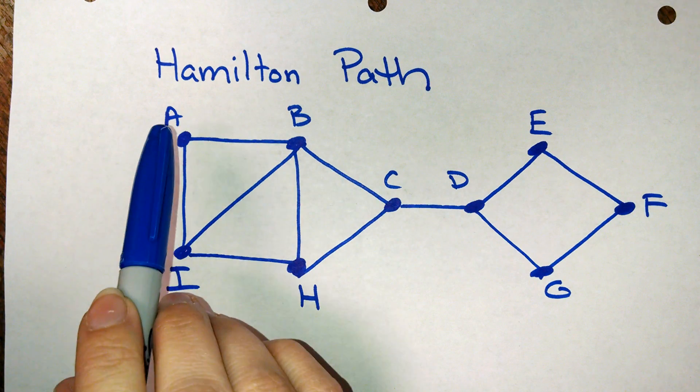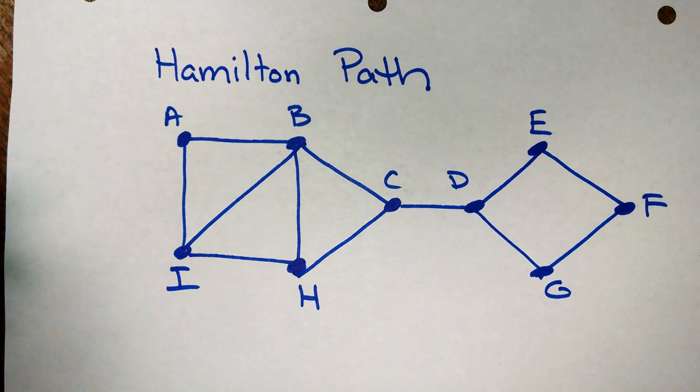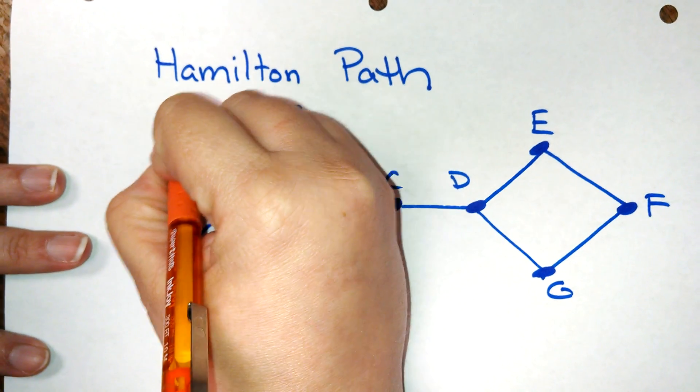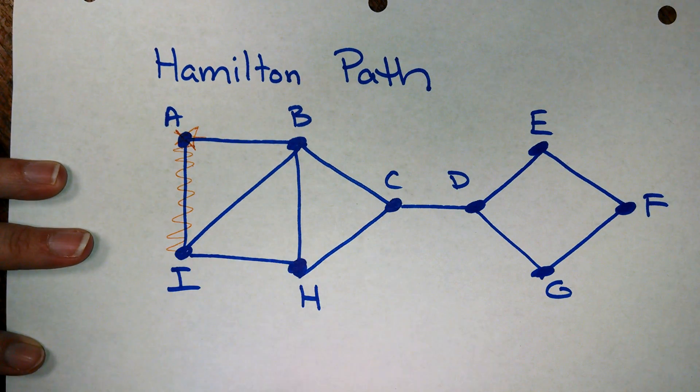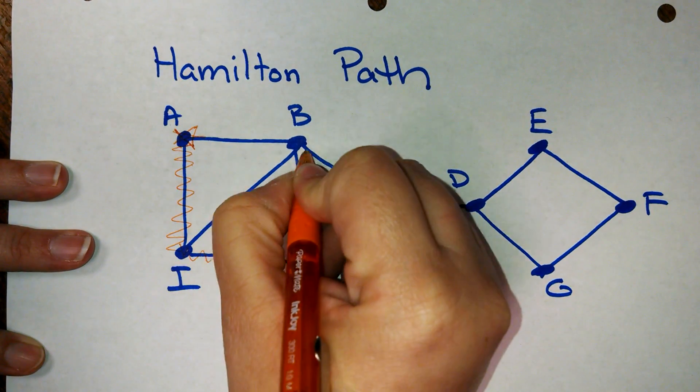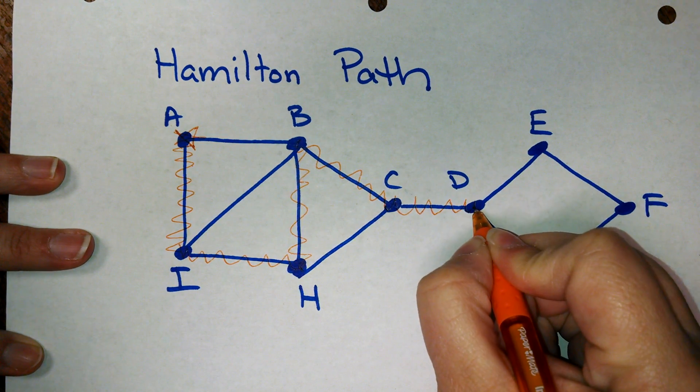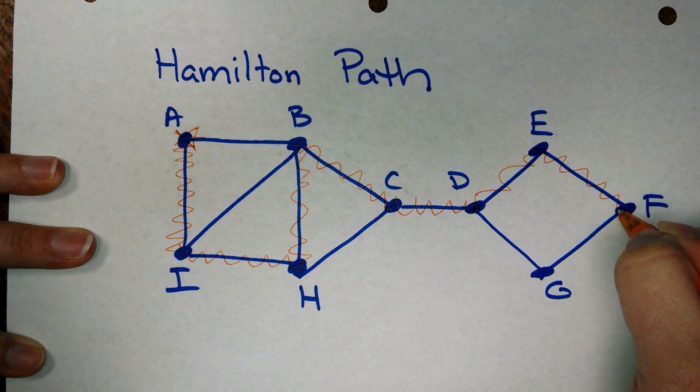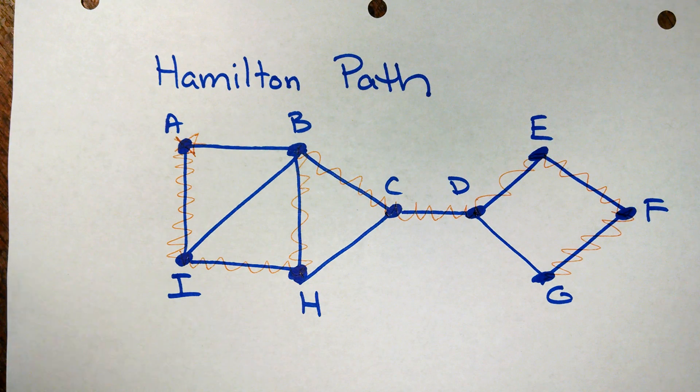So all we need is a path that goes through each one of these vertices once and only once. So I'm going to start at A, I'm going to go to I, then I'll go to H, I'll go to B, C, D, E, F, and G. And there, I've been through every single one of the vertices in the graph on this path.